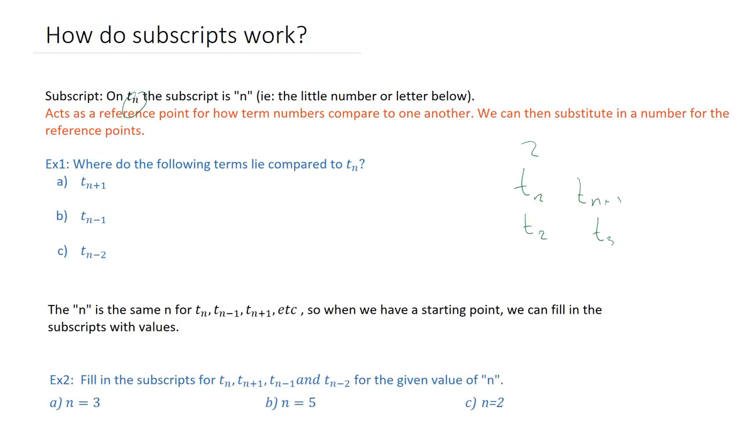T_n is basically your focal point, so it's thought of as the current term. We want to be able to describe where terms lie compared to it. So if I have T sub n, my question is: where do the following terms lie compared to T sub n? So T_n+1, well n plus one means one greater, meaning the term directly after. So T_n+1 is one term after T_n.